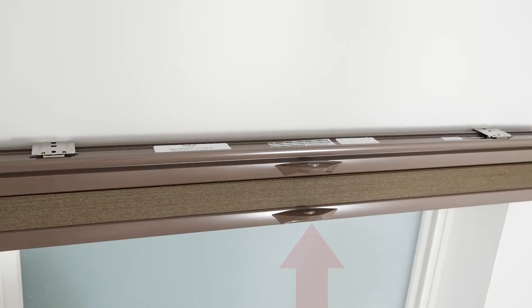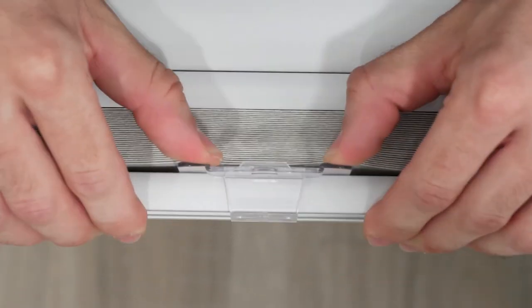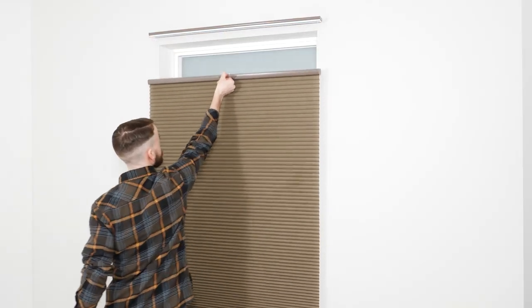If your shade doesn't have a built-in lift handle like this one, the last step is to simply snap on the handle. And that's it! Now just pull the shade up and down a few times to make sure everything looks and works right.